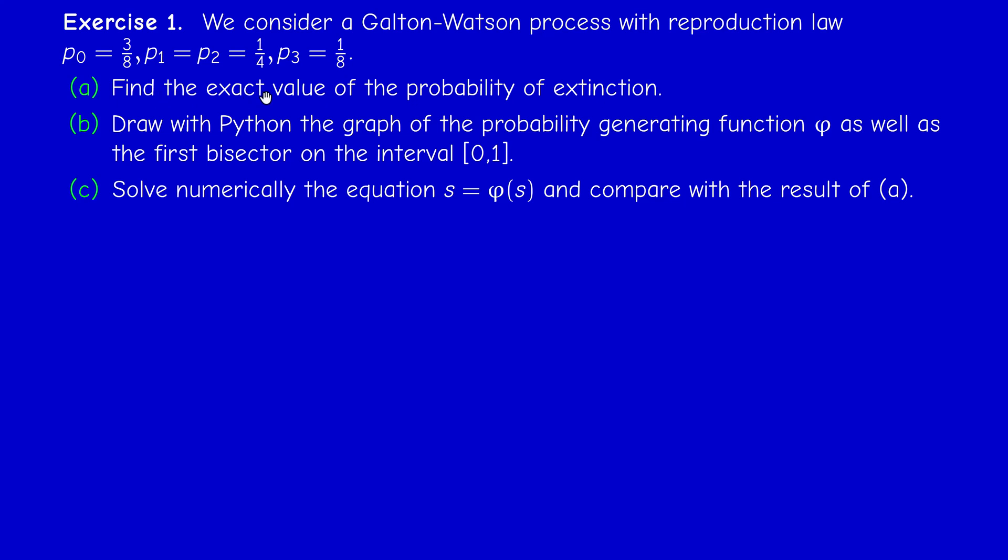The first question is find the exact value of the probability of extinction. Parts b and c will be solved in Python. We have to draw the graph of the probability generating function and solve numerically the equation s equals phi of s. Here we are going to solve it algebraically because the probability generating function of the reproduction law is p0 plus p1 s plus p2 s squared plus p3 s cubed.